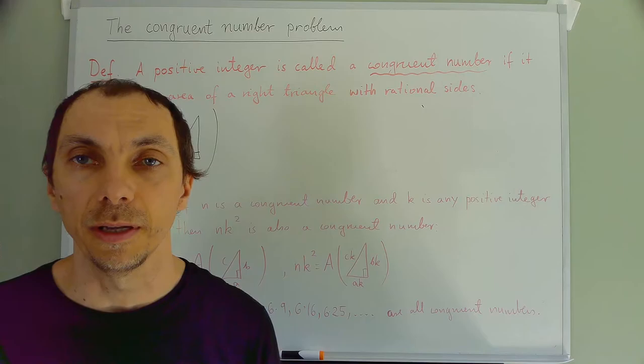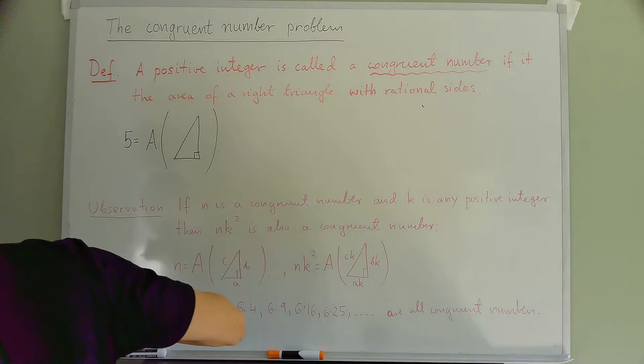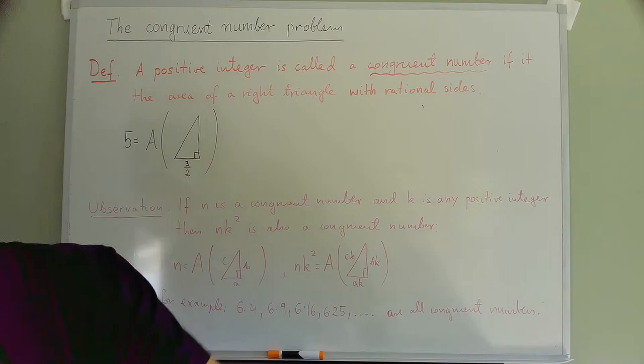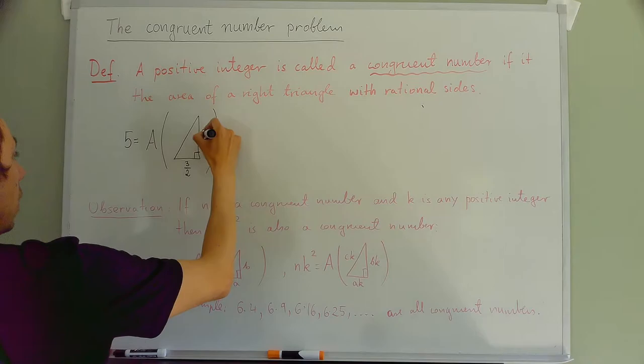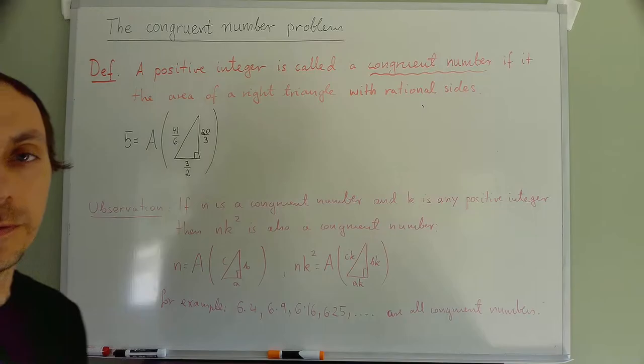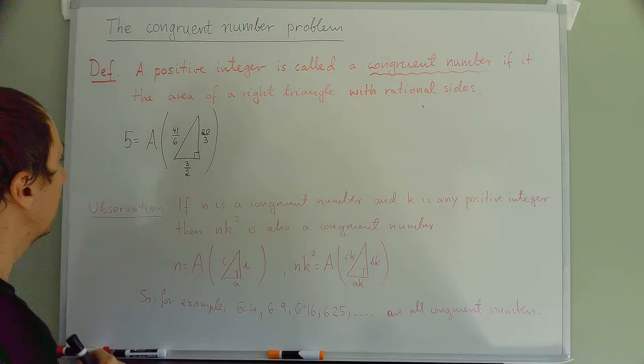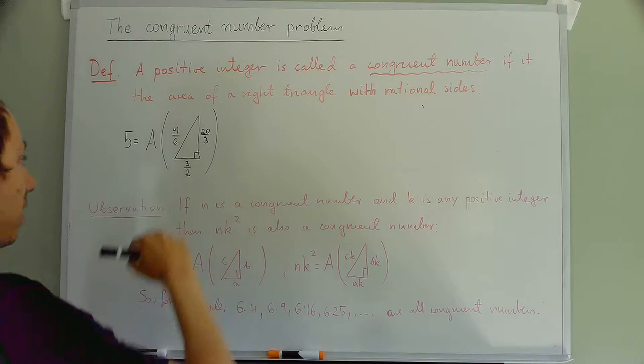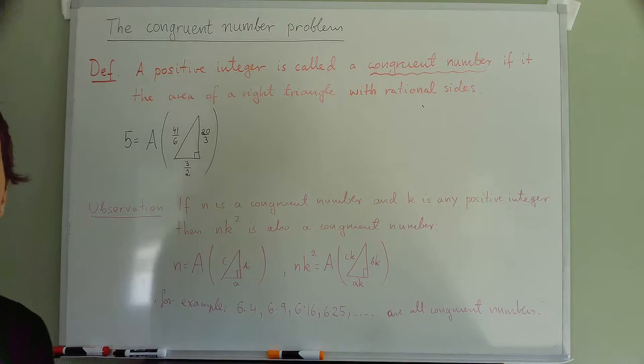So 5 turns out to be a congruent number, and the sides are 3/2, 20/3, and 41/6. Let's see the area of a right triangle—that's just the product of the two legs divided by 2. So 3/2 times 20/3 is 60/6, which is 10, divided by 2 is 5. So it's got the correct area.